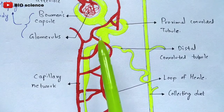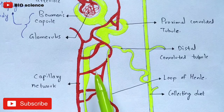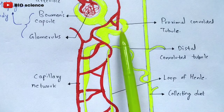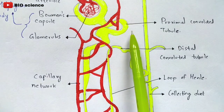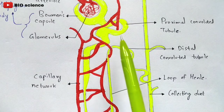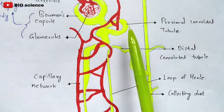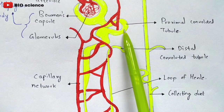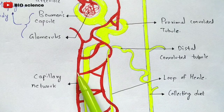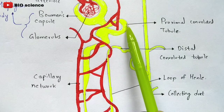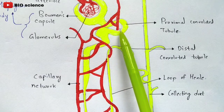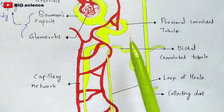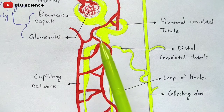The main function of the peritubular capillaries is that when the primary urine enters into the proximal convoluted tubule, this capillary network absorbs all the nutrients present in that primary urine. Those nutrients include glucose, amino acids, vitamin C, calcium, and 75% of water. This process is called tubular reabsorption — the name itself indicates that absorption will be done.